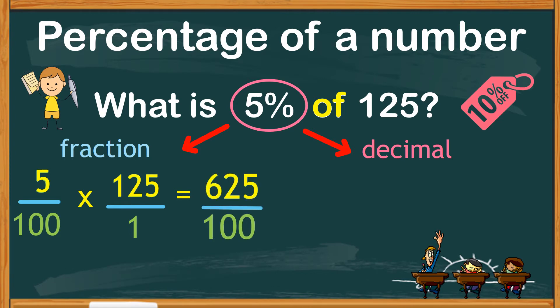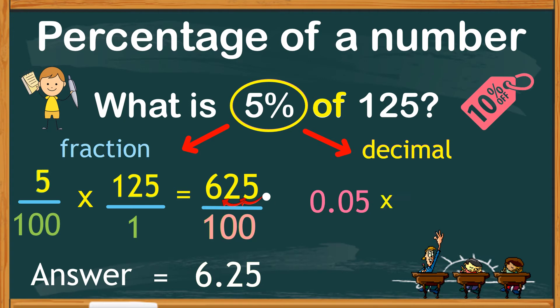In this case, 5 times 125 is 625 all over 100. It means 625 divided by 100. When dividing a number with 100, all we need to do is move the decimal point two places to the left. We now have 6.25. So, for our answer, 5% of 125 is 6.25. The other method is by changing percent into a decimal. So, 5% in decimal is 0.05 multiplied by 125. We get the same product of 6.25.